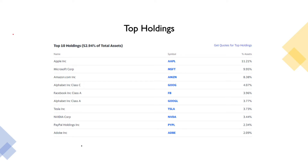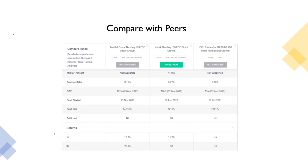AMC is already a choice. This is the same NASDAQ 100 fund of fund. Other AMCs are also in this space — Mirae (Motilal), Aswala, KOTAK, ICICI Prudential — they already have one ETF investing in the market. So in this race, the returns are essentially the same since it is a passive index fund, but the expense ratio differs slightly.